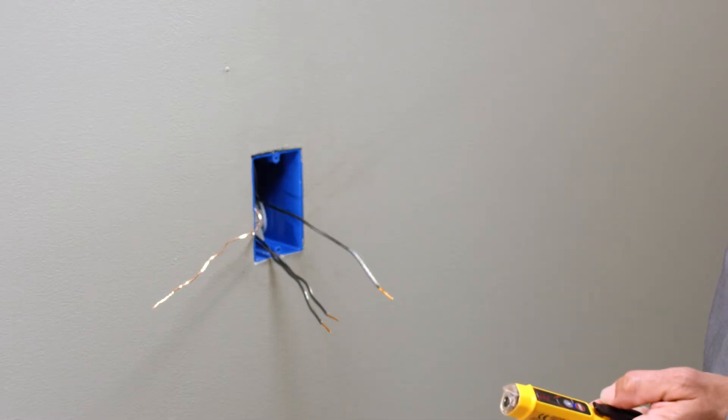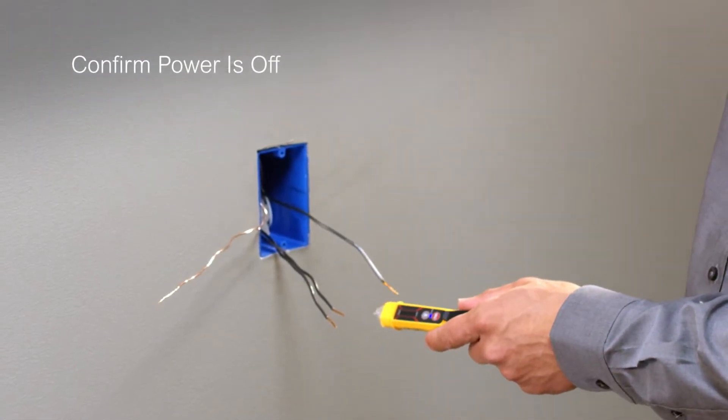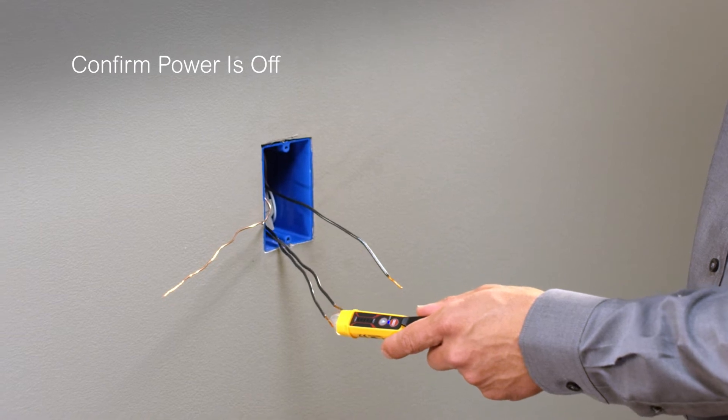Before beginning, ensure the circuit breaker that powers the switch has been turned off at the electrical panel. Confirm it's off using a properly rated voltage sensing device.